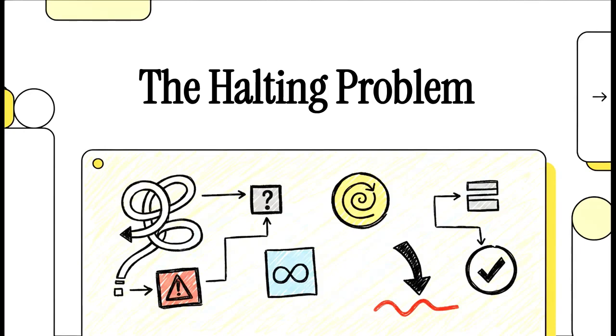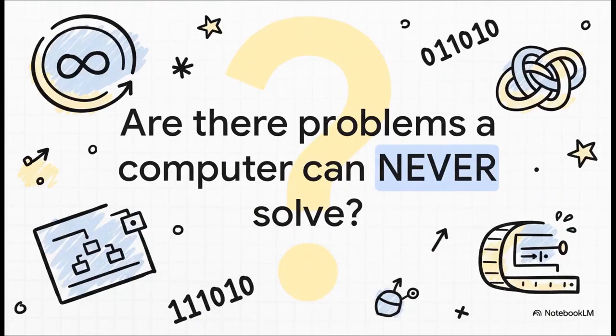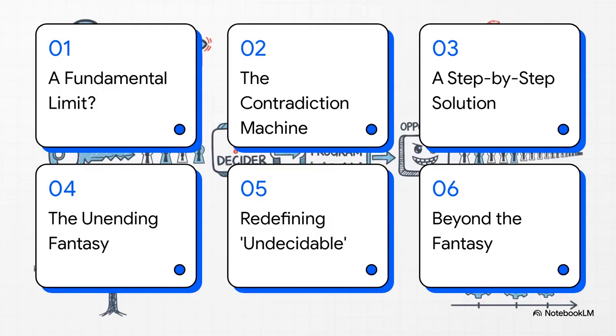You know, in computer science, there's this legendary problem that's supposed to prove there are things computers can just never do. It's talked about like it's this fundamental wall we can never, ever get past. But what if that wall was never really there? What if this whole impossible problem is built on a really simple misunderstanding? For decades, the official answer has been a hard yes, and it's all because of this one single famous problem. But the truth might be a lot more straightforward and honestly, way more optimistic than the textbooks would have you believe. We're going to break this down into six parts. We'll start with the popular myth this whole thing created and we'll end up with what it really means for the future of AI.